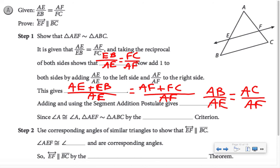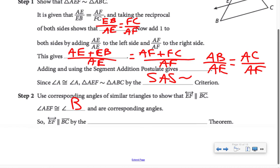If I use the segment addition postulate, we see that AE plus EB is equivalent to AB over AE, and AF plus FC is equivalent to AC over AF. Since angle A is congruent to angle A, these triangles are similar by side-angle-side similarity. Now that I have that the triangles are similar, their corresponding angles are congruent. Angle AEF and angle B are corresponding angles and they're congruent. So EF is parallel to BC by the converse of the corresponding angles theorem.